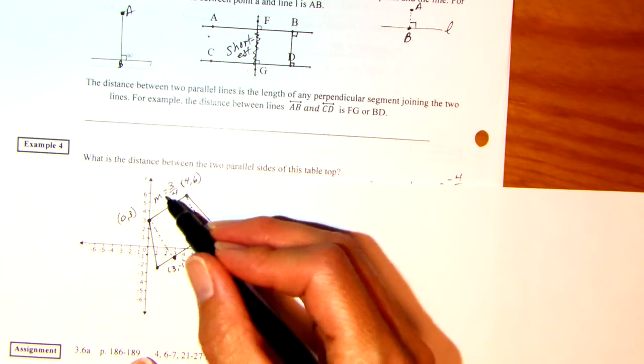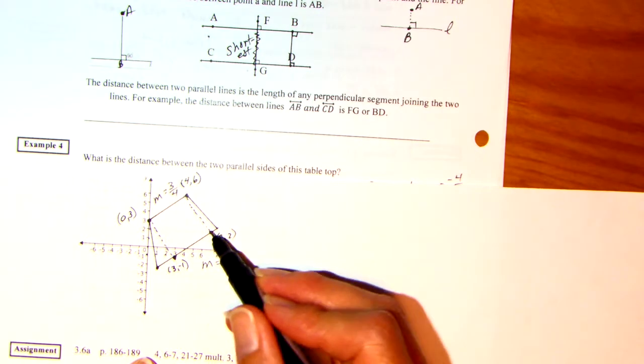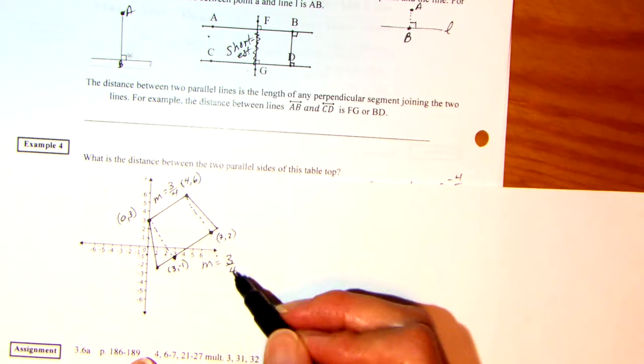In order for this to be a trapezoid, you need to have one set of parallel lines. So what I want to do is find the slope of this line. To go from this point to this one, I have to go up three. One, two, three, over four. So the slope is three-fourths. And how about from here to here? Up three, over four. So the slope is three-fourths.